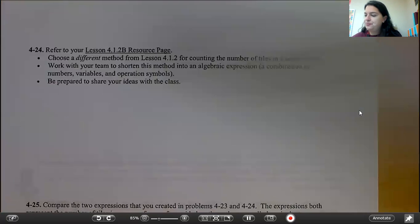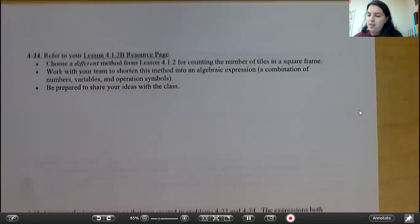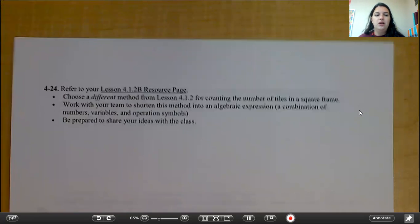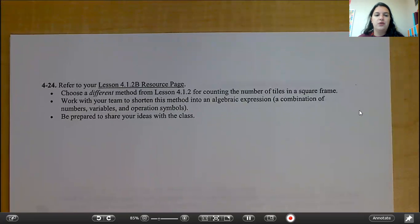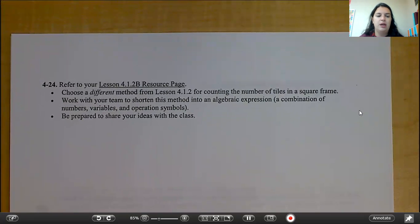So we're going to start with 4-24. 4-24 says refer to your lesson 4-1-2-B resource page. Choose a different method from lesson 4-1-2 for counting that number of tiles in the square frame. Work with your team to shorten this method into an algebraic expression, a combination of numbers, variables, and operation symbols. Be prepared to share your ideas with the class.